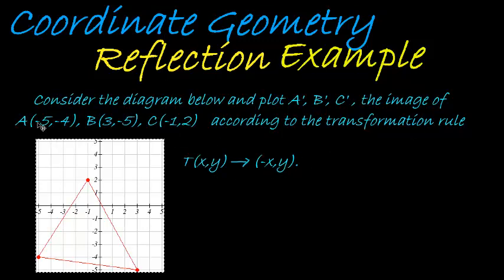Okay, so A is the point negative 5, negative 4, so this is A. B is the point 3 and negative 5, so that's B. And C is the point negative 1 and 2, so that's the point C.